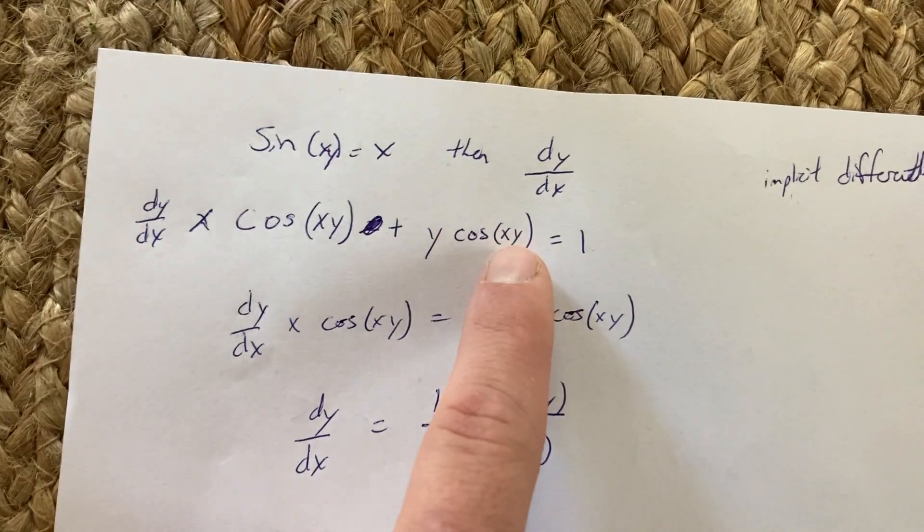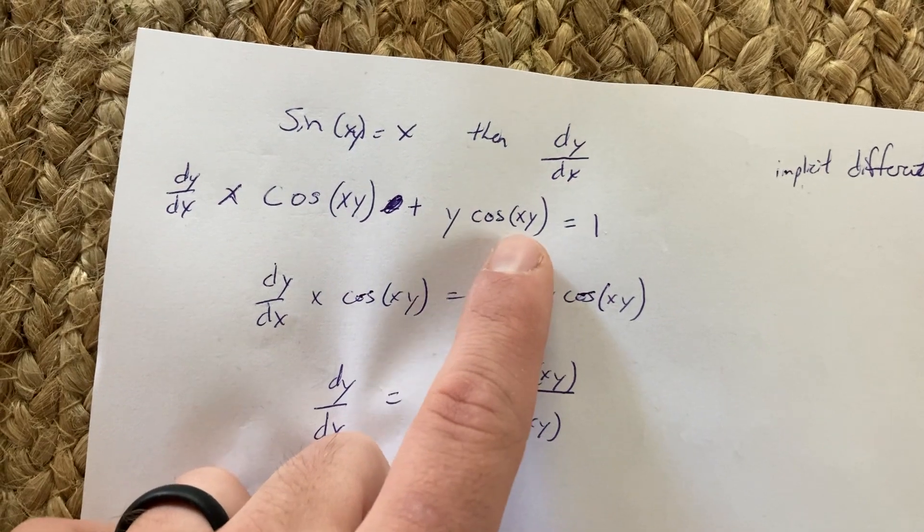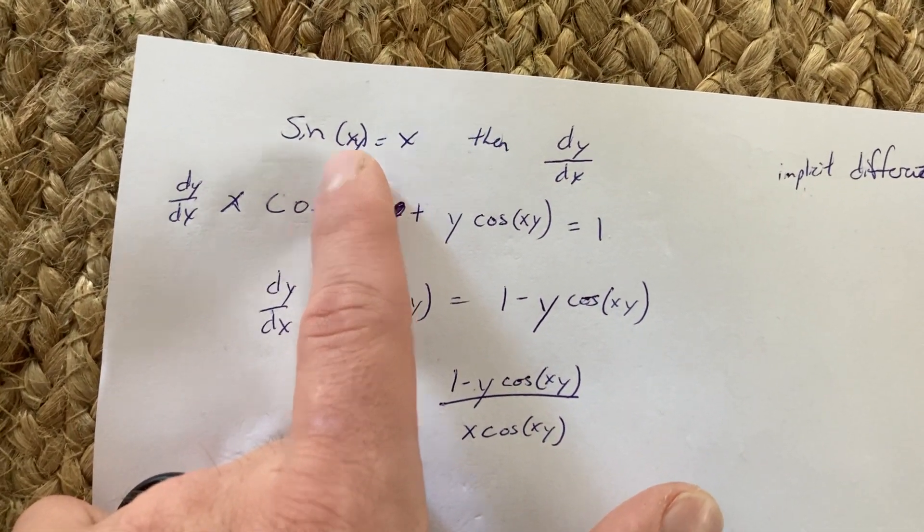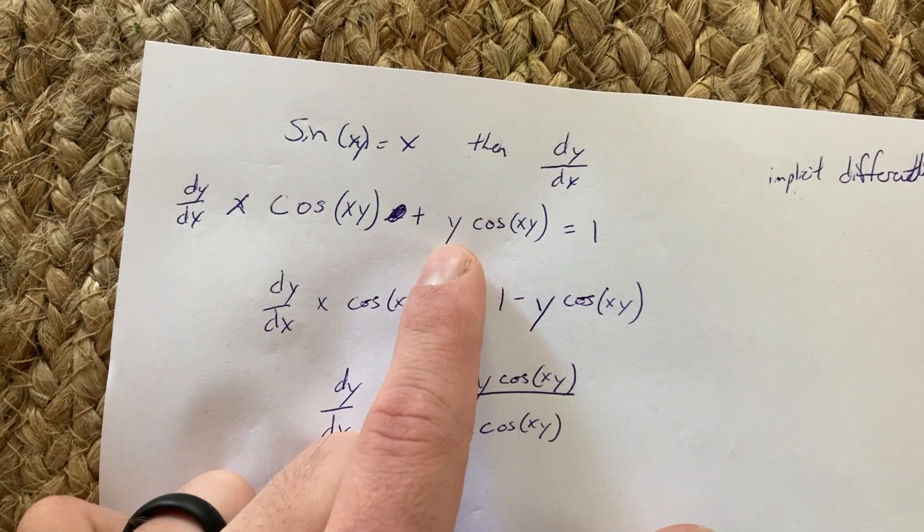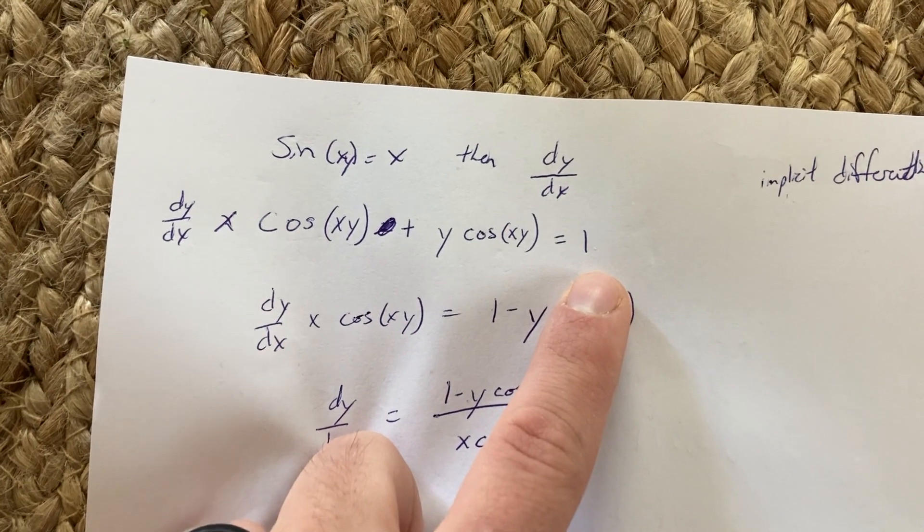Then doing the same thing over here, but now with respect to x. Derivative of sine is cosine. Derivative of x is just 1, so bring the y to the front. Then right here, this is just 1.